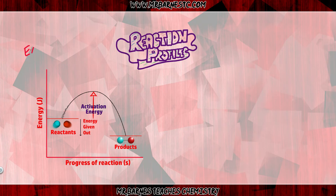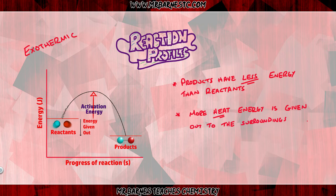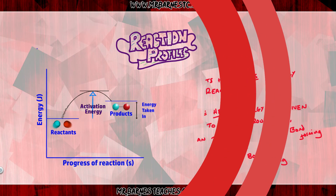In summary, if you want to draw a reaction profile for an exothermic reaction, make sure the products are on the right-hand side and have less energy than the reactants — in other words, the line is lower. The explanation is that more heat energy is given out to the surroundings when bonds are formed than taken in when bonds are broken.